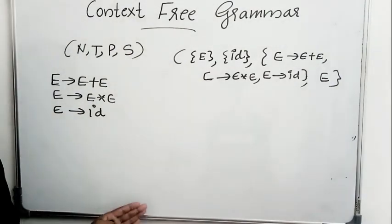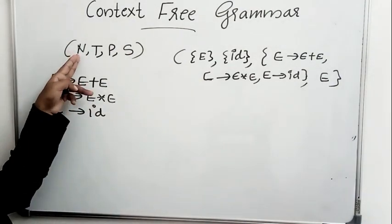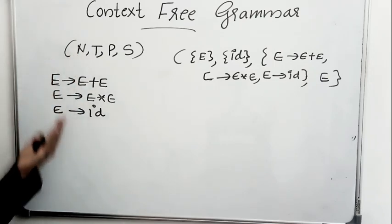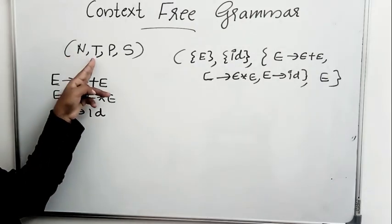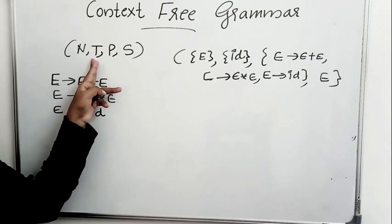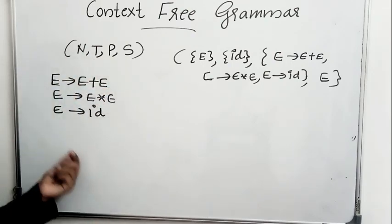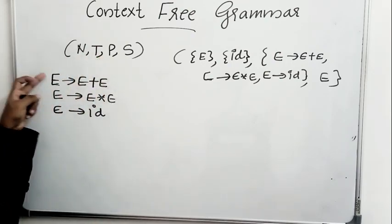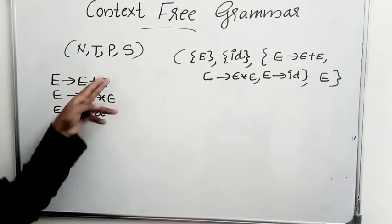To recap: a context-free grammar is a quadruple — N, the set of non-terminals (symbols appearing on the left-hand side of productions); T, the set of terminals (symbols that do not appear on the left-hand side of any production); P, the set of production rules (all the productions listed); and S, the start symbol.